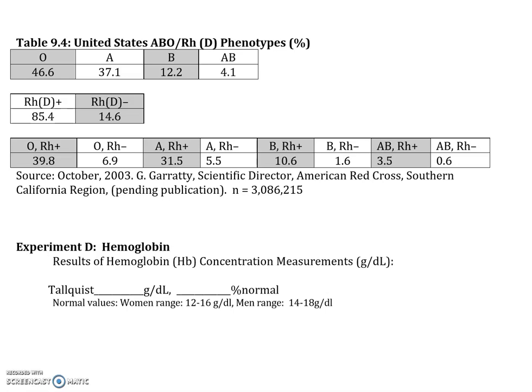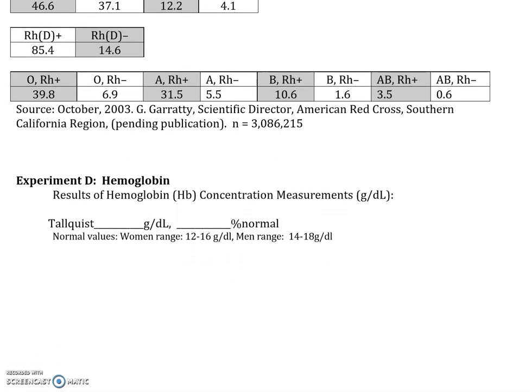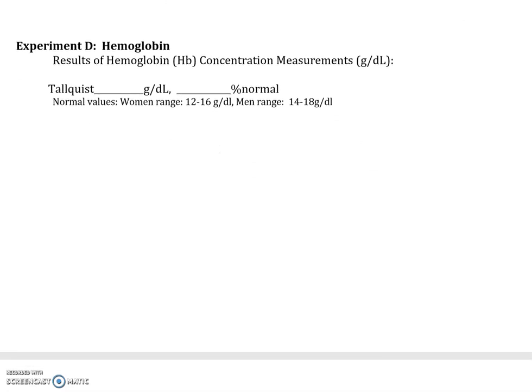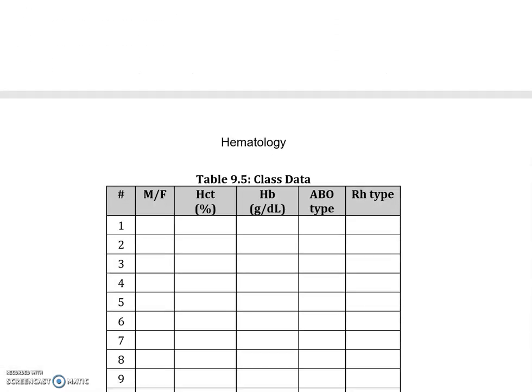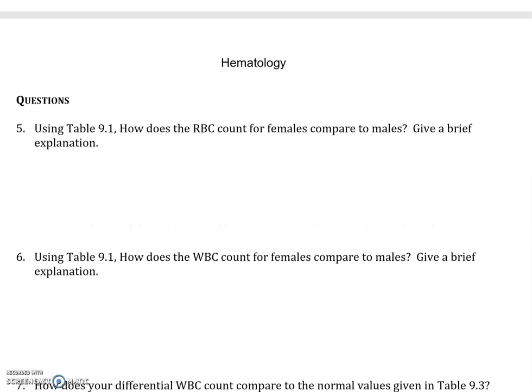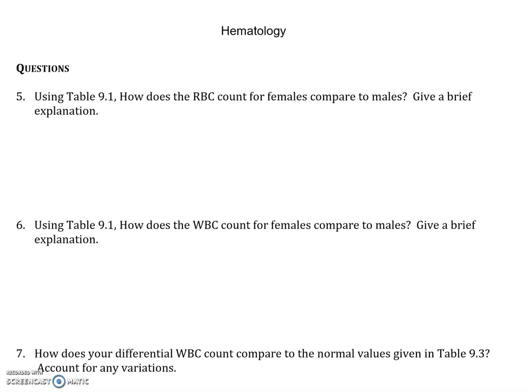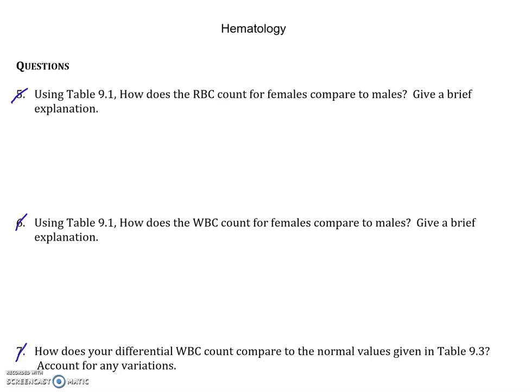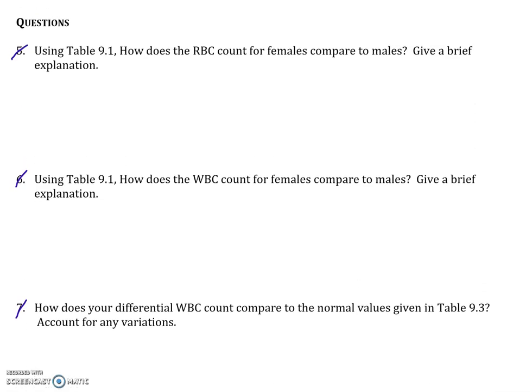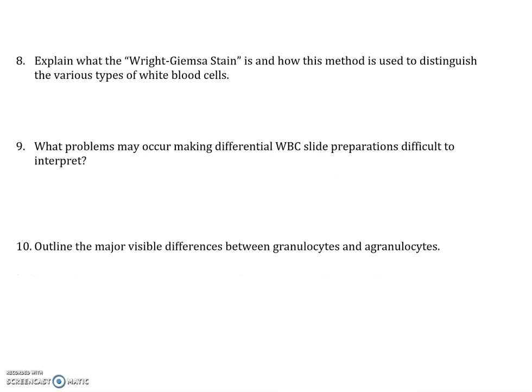The RH factor is present in about 85% of the population, with RH negative being about 15%. You can enter your hemoglobin measurements and class data — though we obviously won't be doing a class data table. For question 8, the Wright-Giemsa stain — that's a sequence of a fixative, eosin, and the purple basic dye — enables you to distinguish those two white blood cells that are hard to tell apart: the eosinophil and the basophil, by the staining properties of their granules.